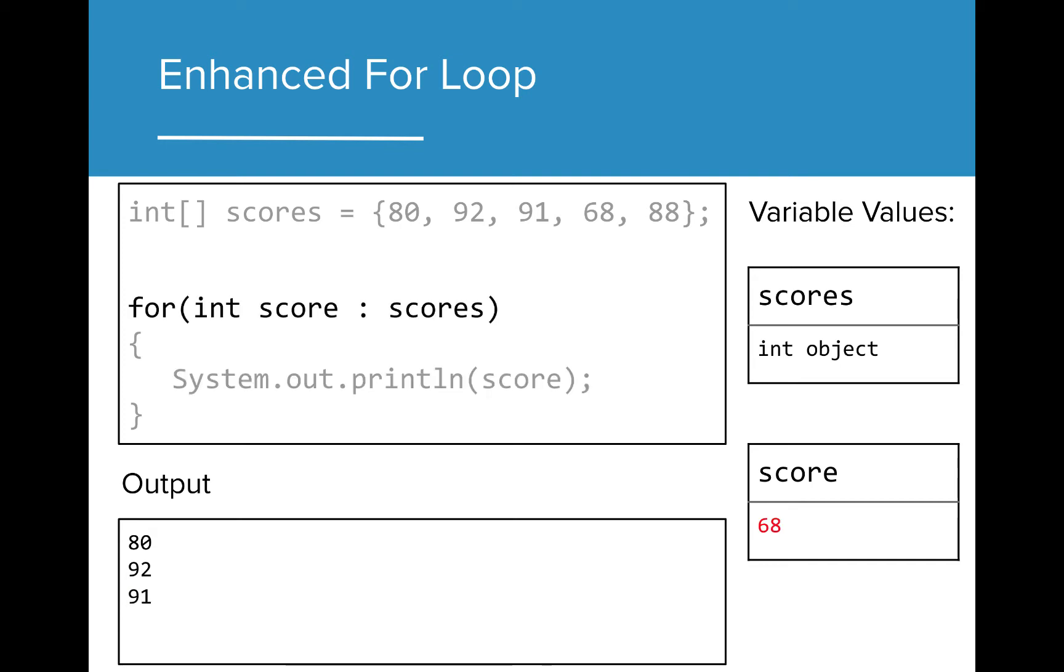Each time, score takes on the next value from the array until we finally get to the last value, at which point our loop is complete.